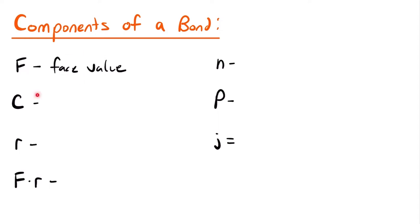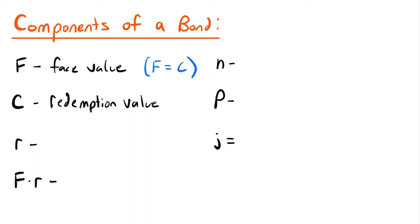Similar to the face value, C is known as the redemption value and is the amount that needs to be paid at the end of a term. When you are paying back a bond at the end of its term, you pay back the amount you originally borrowed — that's the redemption value. Typically the face value will be equal to the redemption value, so F equals C unless stated otherwise by a particular problem.